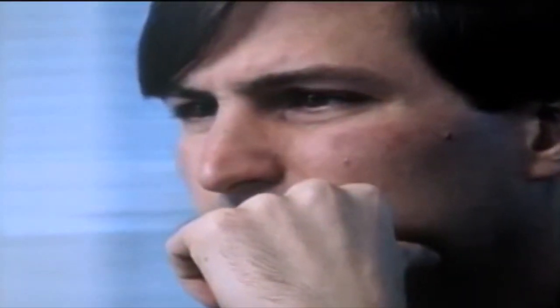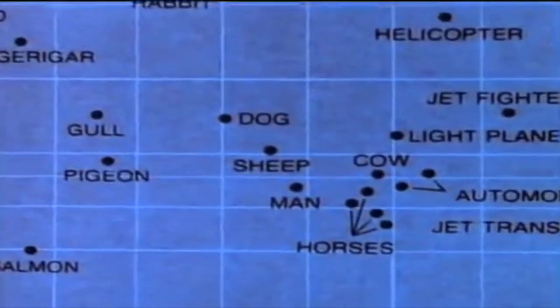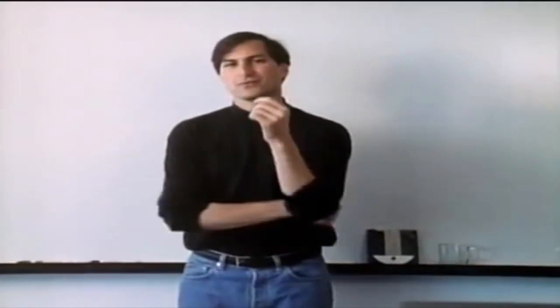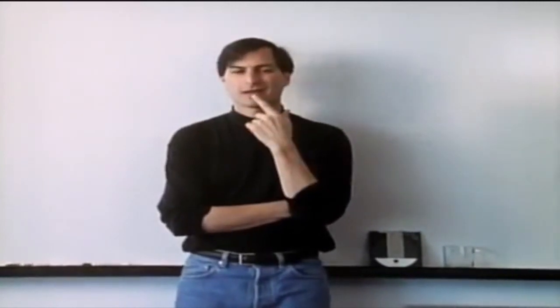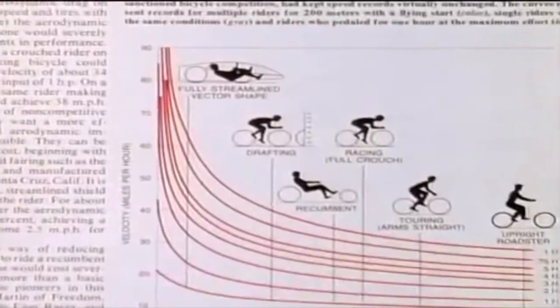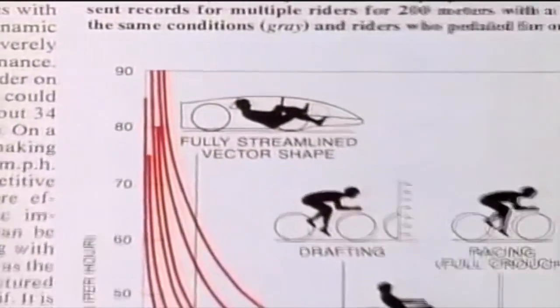Steve Jobs also identified this. I think one of the things that really separates us from the high primates is that we're tool builders. I read a study that measured the efficiency of locomotion for various species on the planet. The condor used the least energy to move a kilometer. Humans came in with a rather unimpressive showing about a third of the way down the list. It was not too proud of a showing for the crown of creation. But then somebody at Scientific American had the insight to test the efficiency of locomotion for a man on a bicycle. A human on a bicycle blew the condor away completely off the top of the charts.